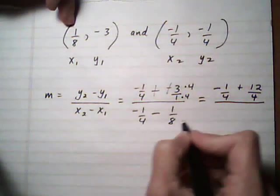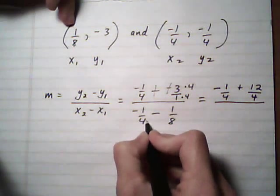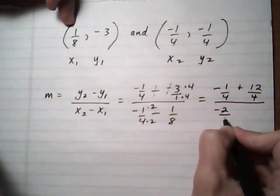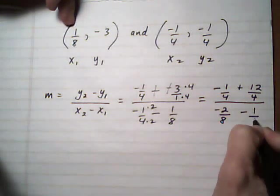All over. And here we want common denominator again. Times 2 times 2. Minus 2 over 8, minus 1 over 8.